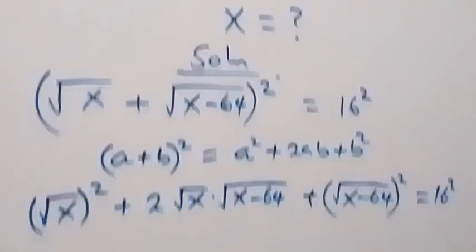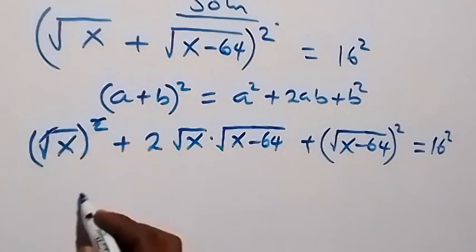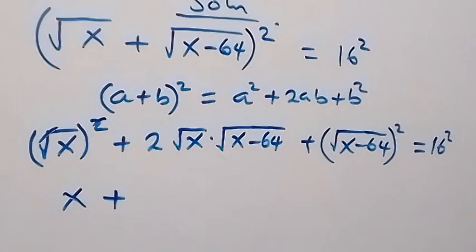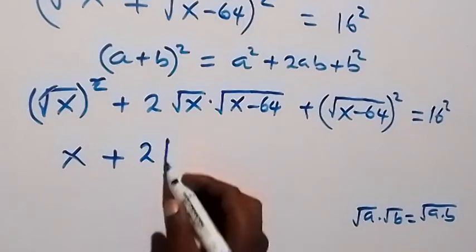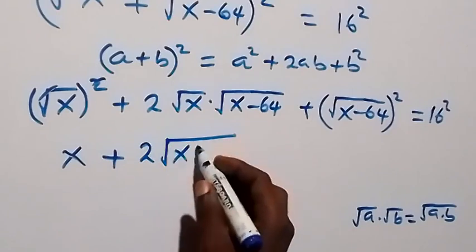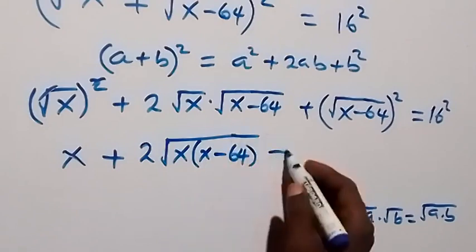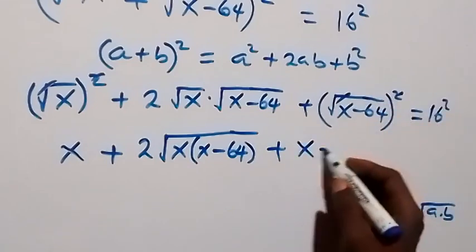In the next step we simplify further. The square cancels the square root, giving us x. Then, since √a × √b equals √(ab), we can combine the middle term inside one root: 2 times √(x(x−64)). Then plus, the square also cancels the square root on the last term, leaving x − 64.